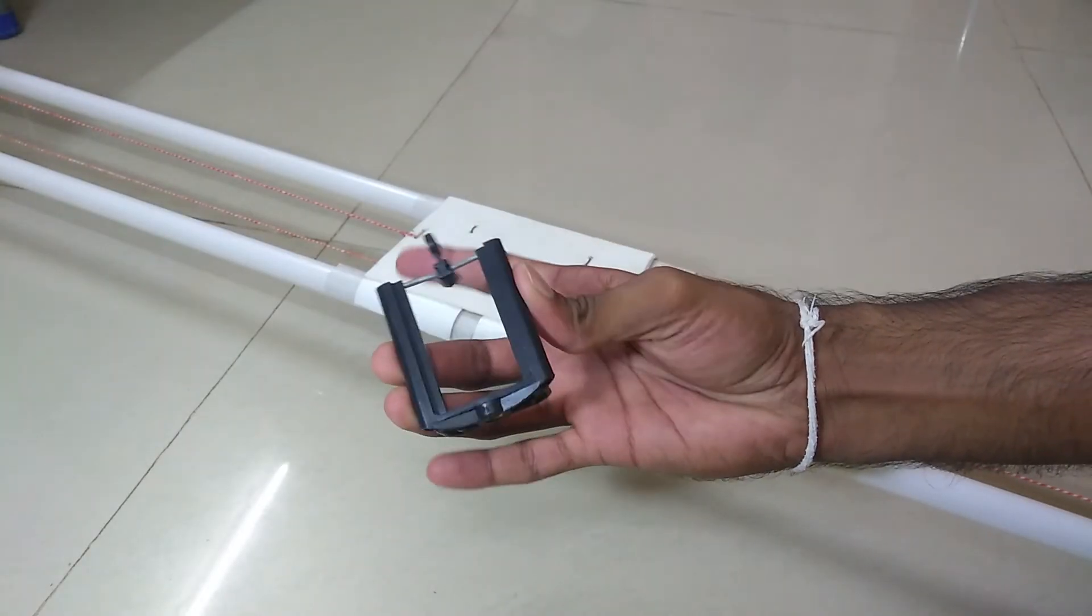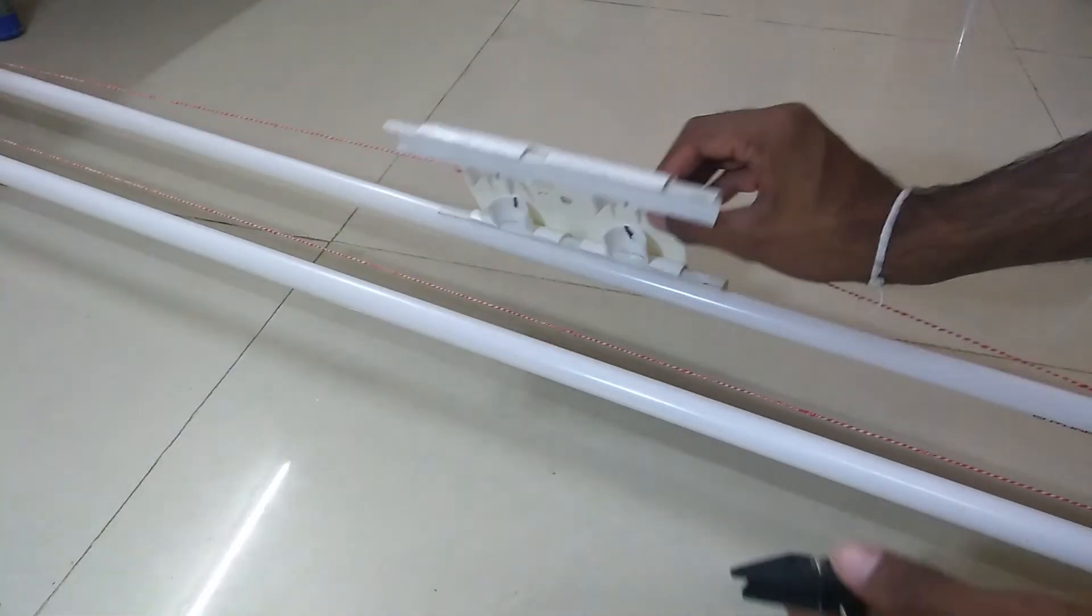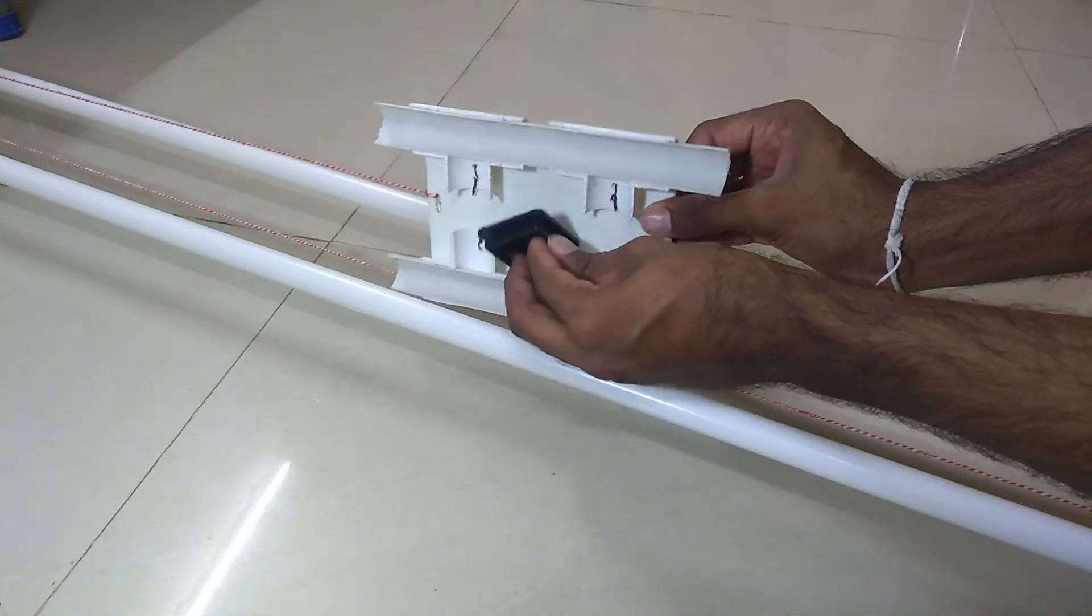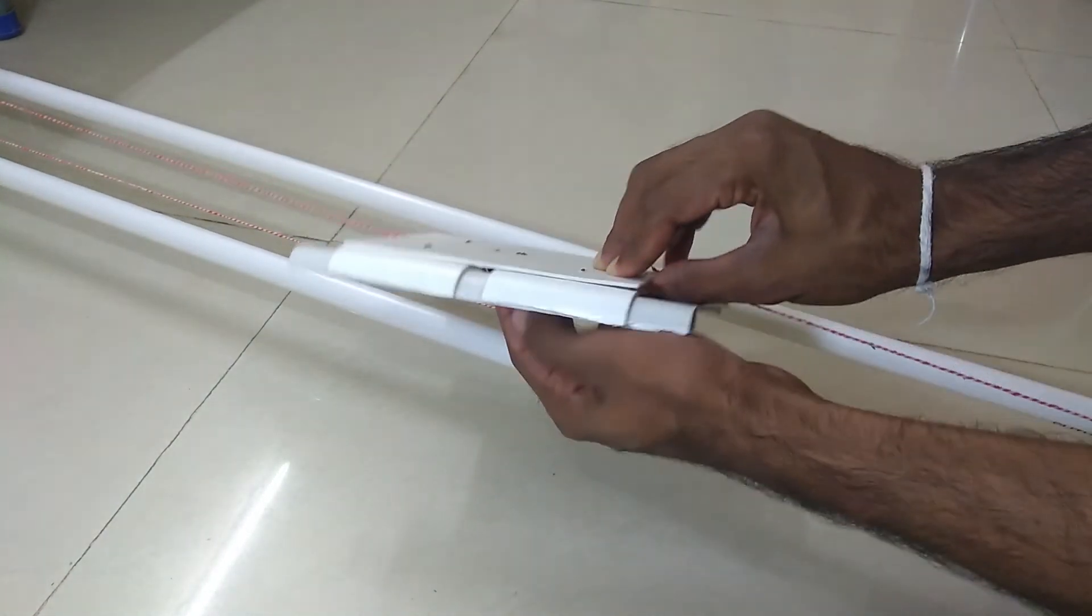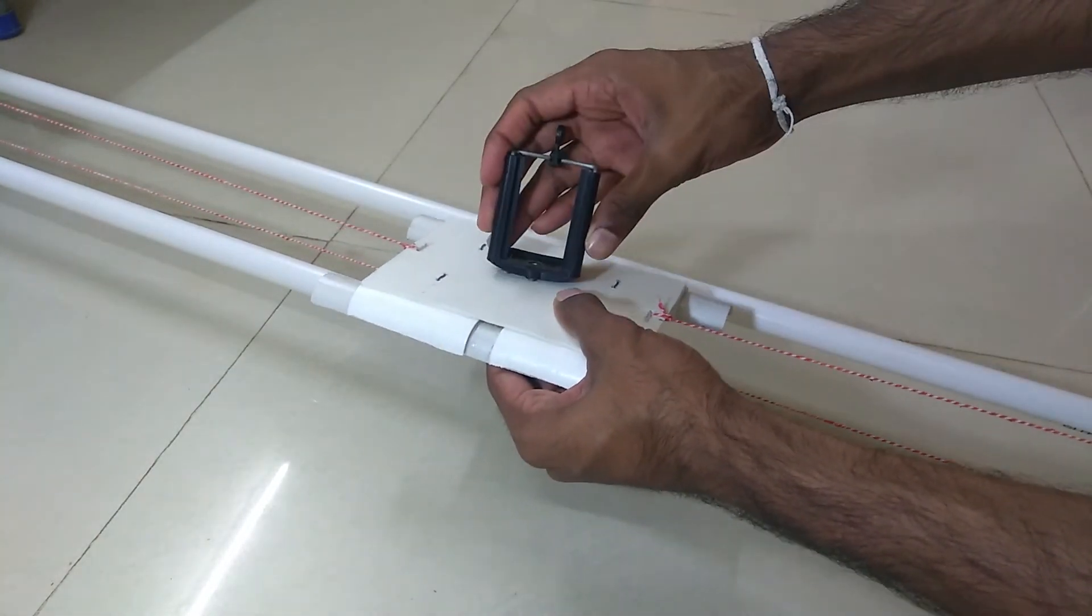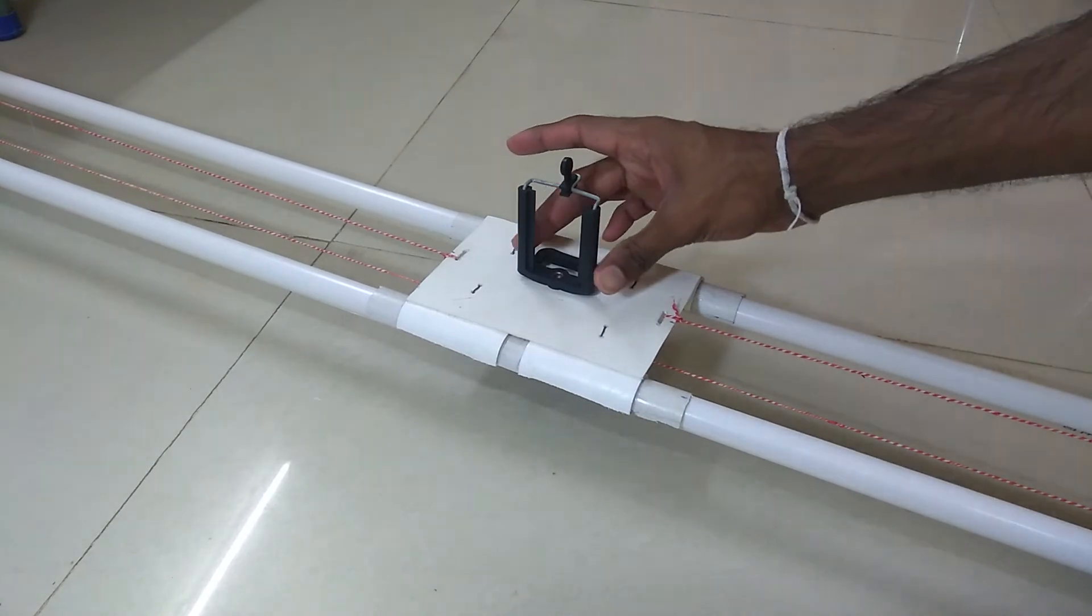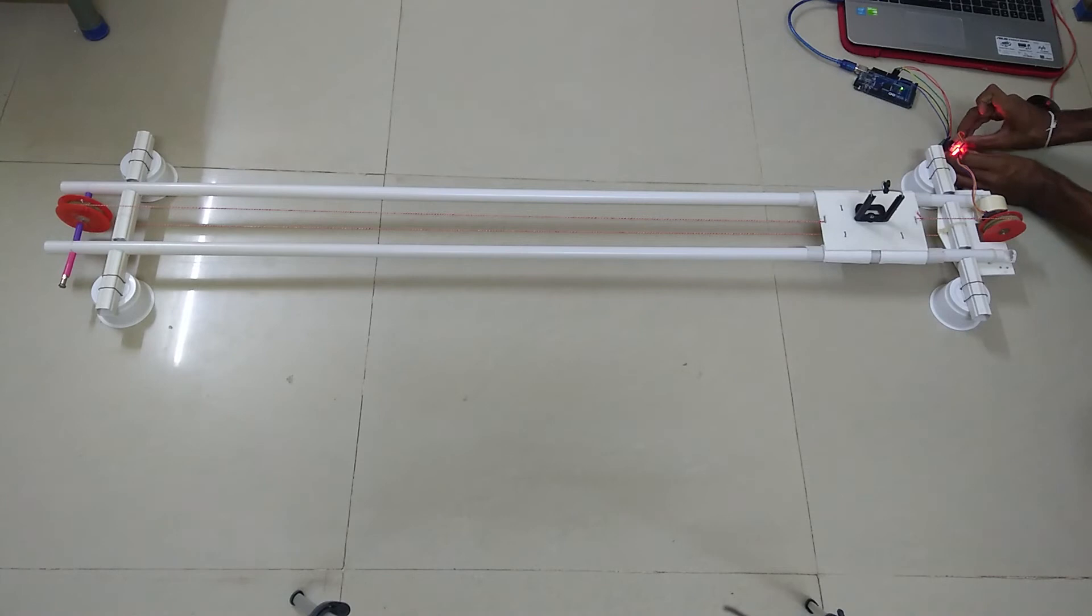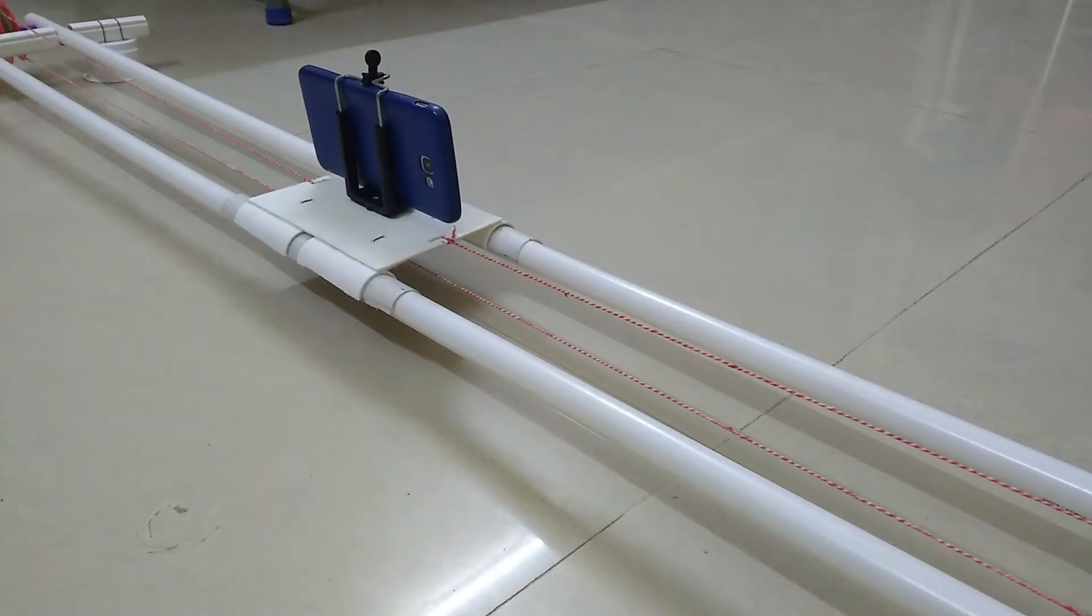Then take the mobile holder and fix it to your sliding part. Now you can fix your phone to the slider and start recording. So this is how it works.